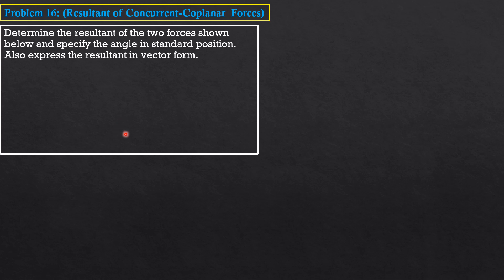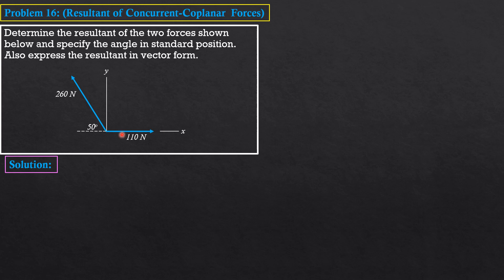The first solution is the simplest of all. There are only two forces. The first force is directed towards the positive x-axis, so the x-component is 110 Newtons and the y-component is zero. The second force is directed up to the left, so the x-component is negative — it is negative 260 cosine of this angle.